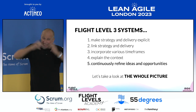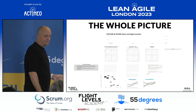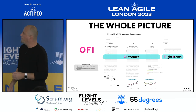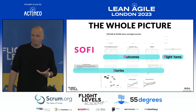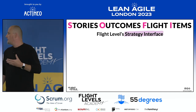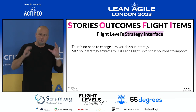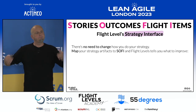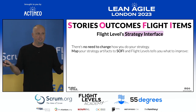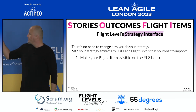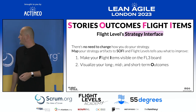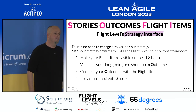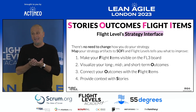Looking at the whole picture, this is a Flight Level 3 system. We can see outcomes, coherent actions — what we call flight items — and stories. That's what we call SOFI: the Strategic Interface of Flight Levels. The idea behind SOFI is that you don't have to stop your strategy work as you're doing it. You take your strategic artifacts, map them to SOFI, then you're in Flight Levels land, and Flight Levels tells you what you need to improve in your strategy. You can map it in four easy steps: make your flight items visible, visualize your long-term, mid-term, and short-term outcomes, connect your outcomes with the actions, and provide context information with stories.